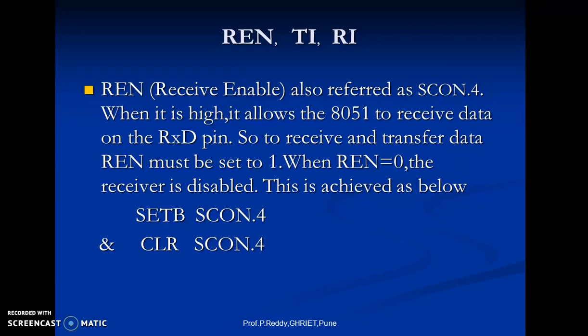REN, or receive enable bit, is the D4 bit of the SCON register, also referred to as SCON bit 4 since SCON is a bit-addressable register. When the REN bit is high, it allows the 8051 to receive data on the RXD pin. If we want the 8051 to both transmit and receive data, REN must be set to 1. By making REN equal to 0, the receiver is disabled. Setting REN can be achieved with the instruction SETB SCON.4, and cleared using CLR SCON.4. These instructions use the bit-addressable feature of SCON and can block any serial data reception.